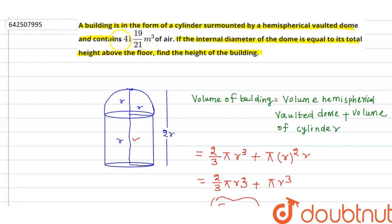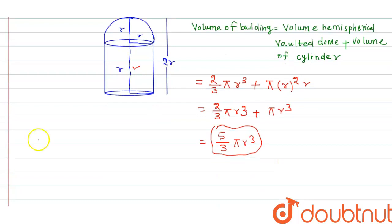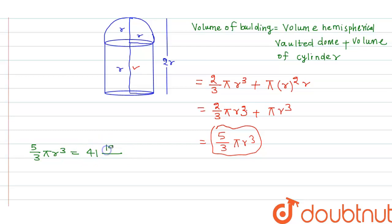The volume of air in the building is given, so we set 5/3 π r³ equal to 41 and 19/21. If we simplify 41 and 19/21, we get 880/21.